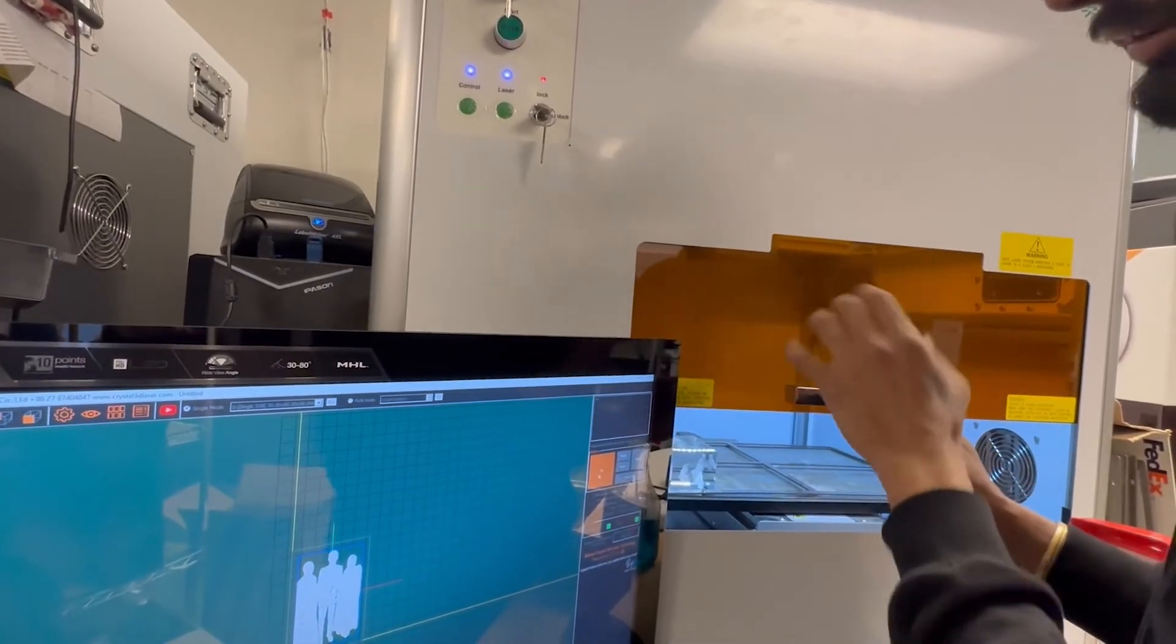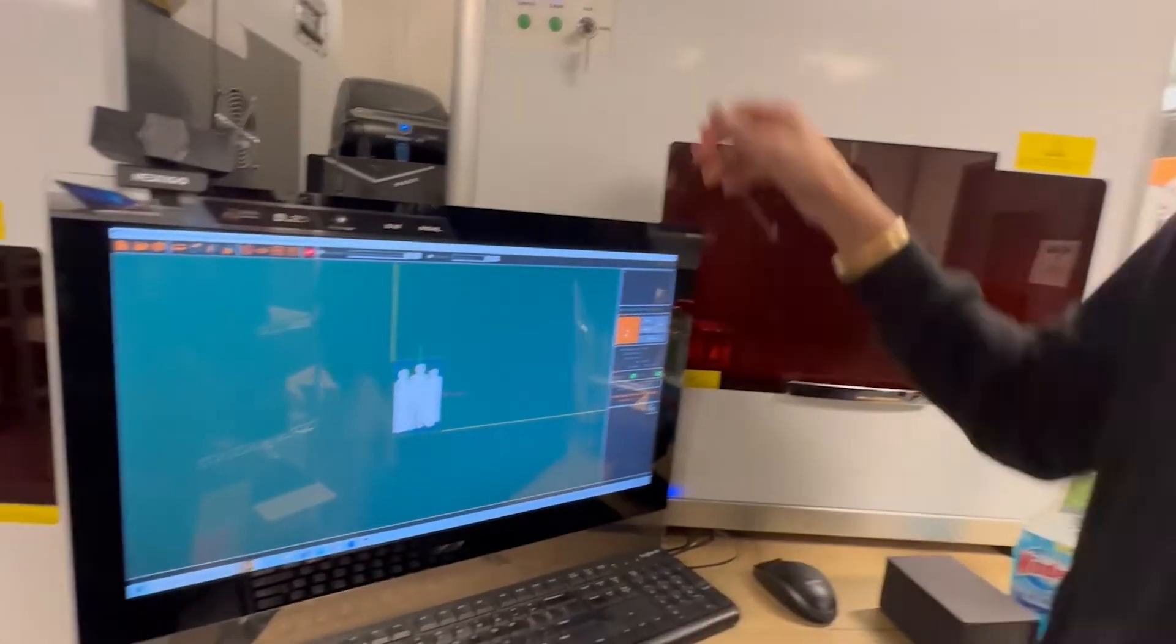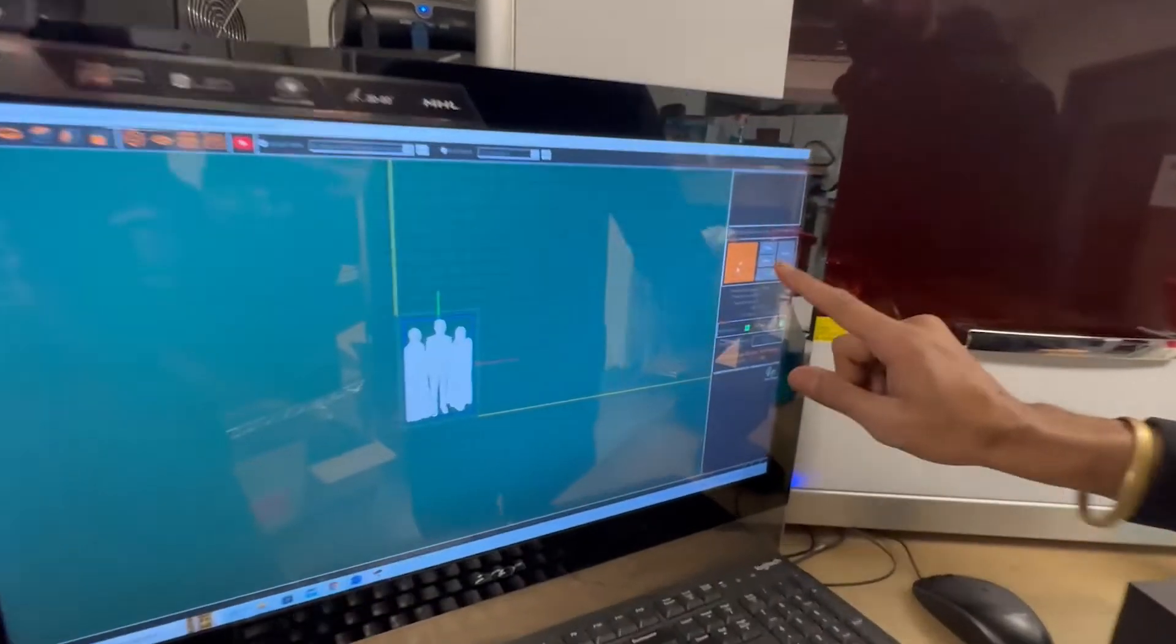Now close this door and press the go option. After pressing go you can see my table is running - the table is moving backwards.